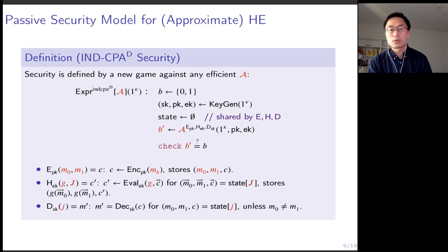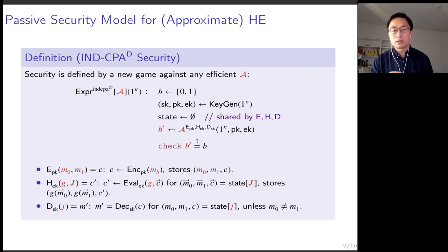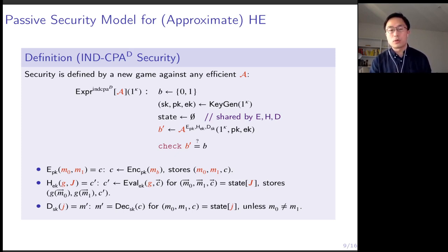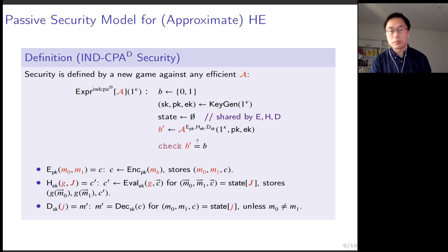The decryption oracle compares the plaintext messages in the pair. If the two plaintext messages are equal, it simply decrypts the indexed ciphertext and returns the decryption result to the adversary. Otherwise, it returns an error symbol. All this definition wants to do is formalize a passive adversary who can encrypt messages honestly, evaluate ciphertexts honestly, and observe the decryption result on honestly generated ciphertexts. This decryption oracle is very different from the one in active security definitions like CCA or CCA2, because it can only decrypt ciphertexts generated by the encryption and evaluation oracles — it cannot decrypt ciphertexts arbitrarily chosen by the adversary.